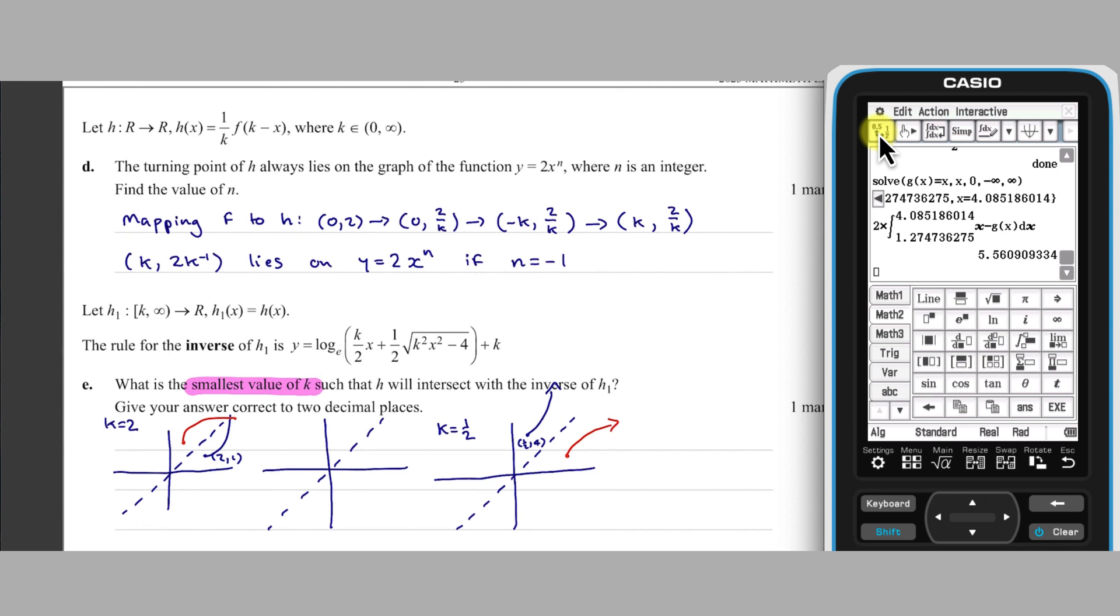This smallest value of K will be the threshold, where K1 touches the line Y equals X, and is tangential to it, and so will touch its inverse at that point. So, we need K such that, when H intersects the line Y equals X, its gradient is equal to 1.